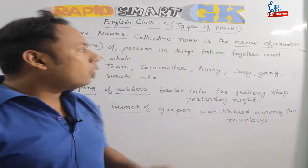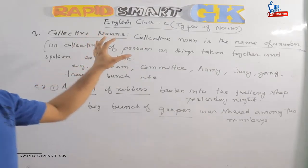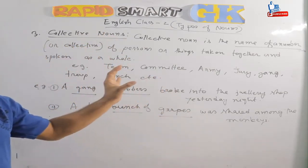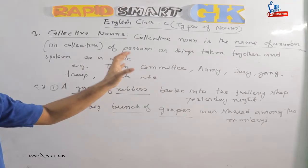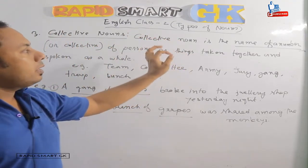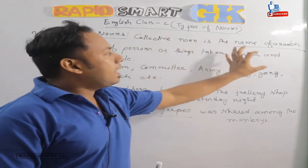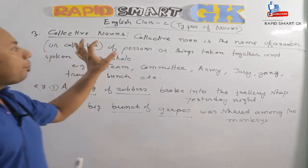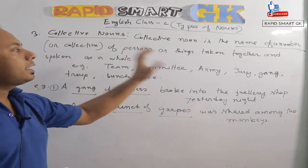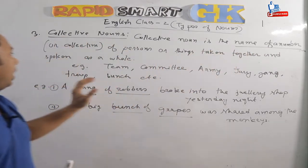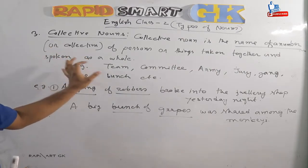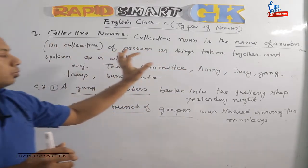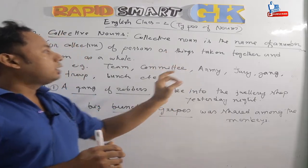Next, we have collective nouns. A collective noun is the name of a number or collection of persons or things taken together and spoken of as a whole. It means we are talking about the name of a group.